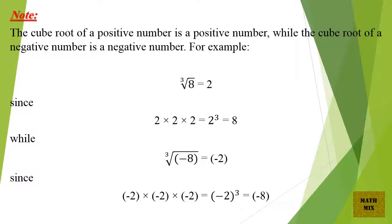The cube root of a positive number is a positive number, while the cube root of a negative number is a negative number. For example, the cube root of 8 equals 2, since 2 times 2 times 2 equals 2 cubed, which equals 8. While the cube root of minus 8 equals minus 2, since minus 2 times minus 2 times minus 2 equals minus 2 cubed, which equals minus 8.